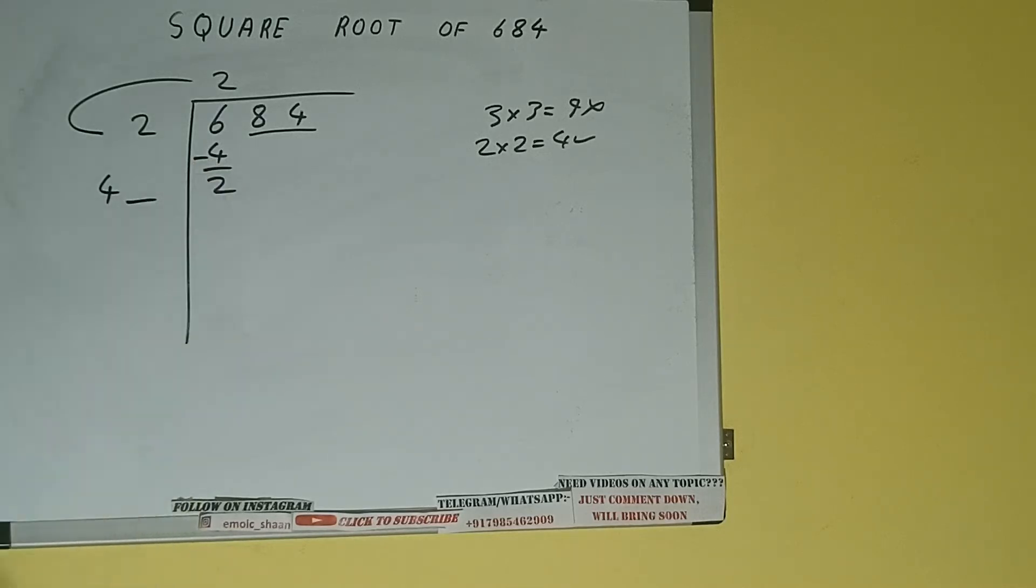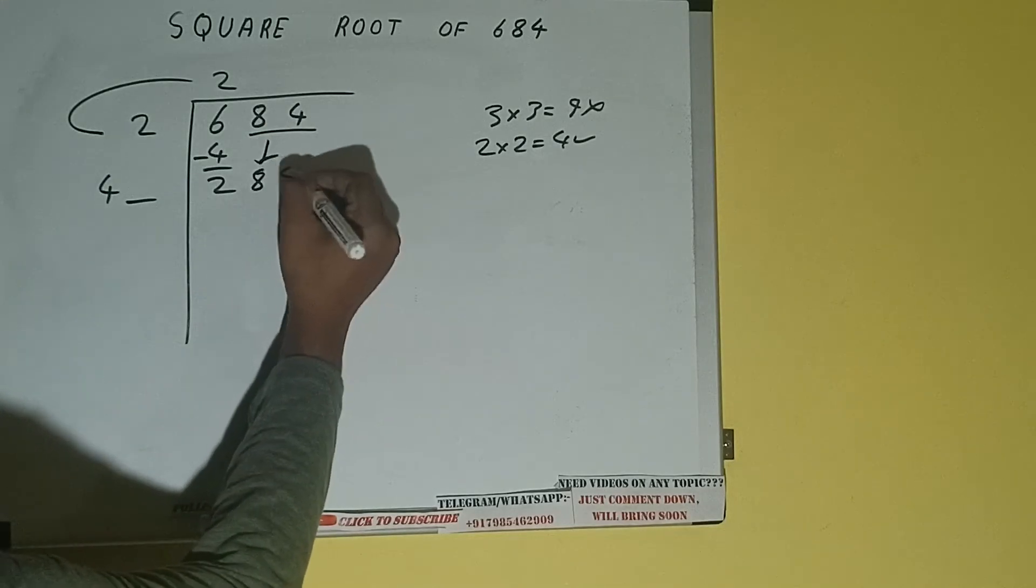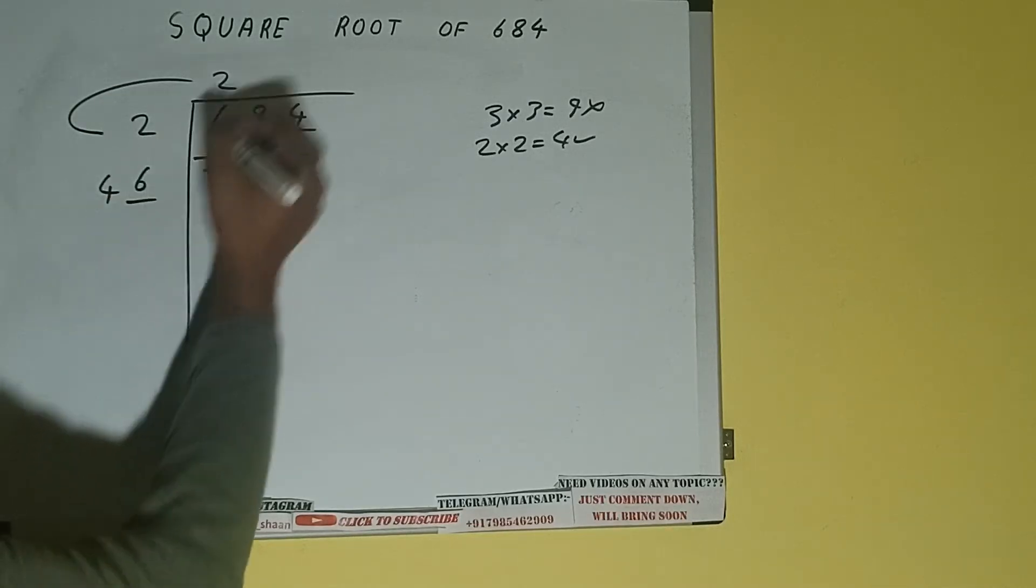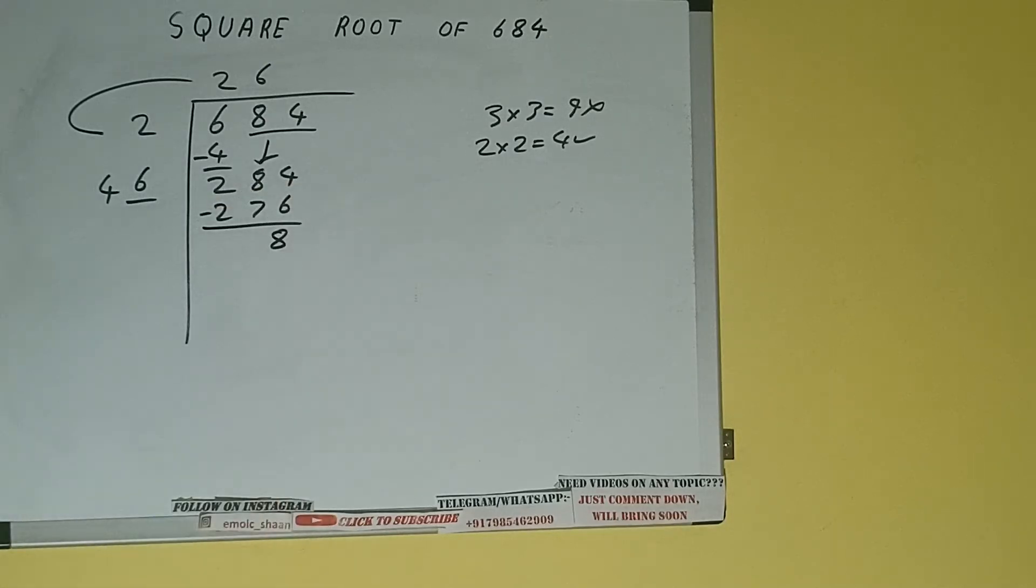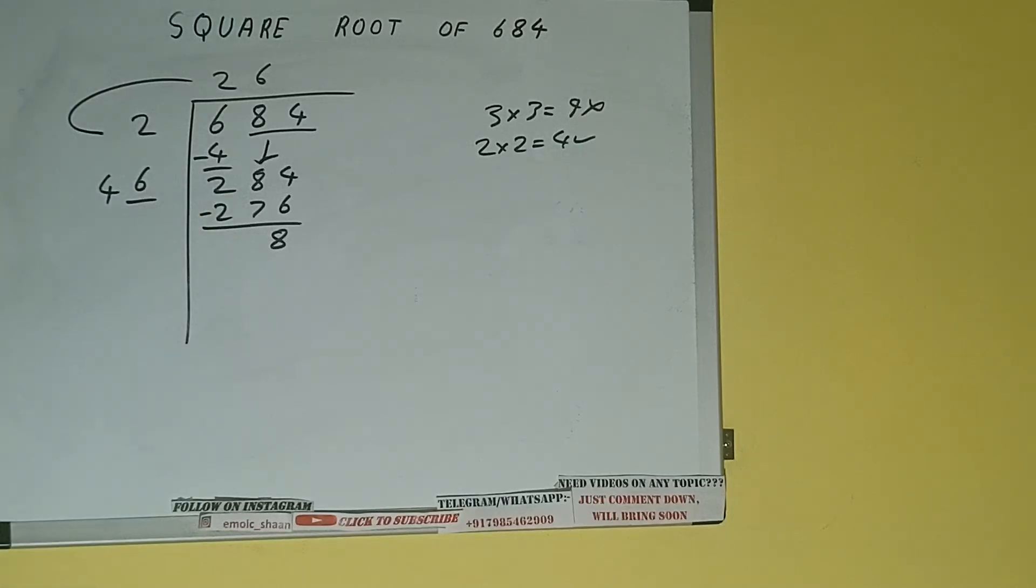Write it here and keep a digit extra, and this number we need to make it big. So bring the next pair down, and it will be 284. Now whatever number we write here, we have to write here also. So if we write 6 here and 6 here, we'll get 276. Subtract, 8 will be left. Now 46 into 6 we did, so add both. So 46 plus 6 will be 52.